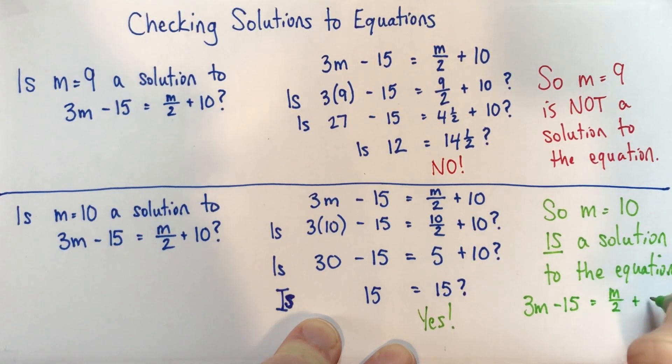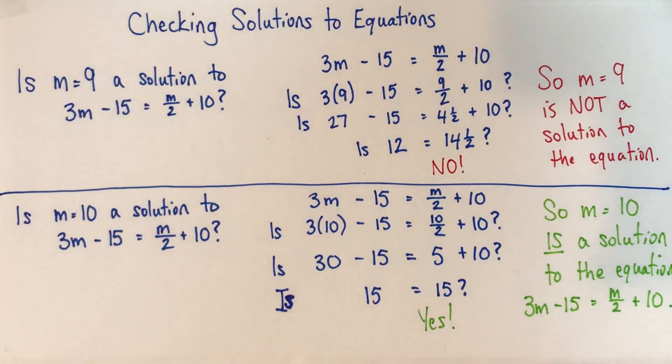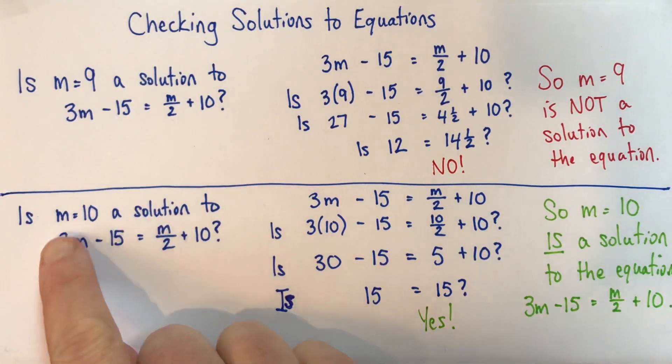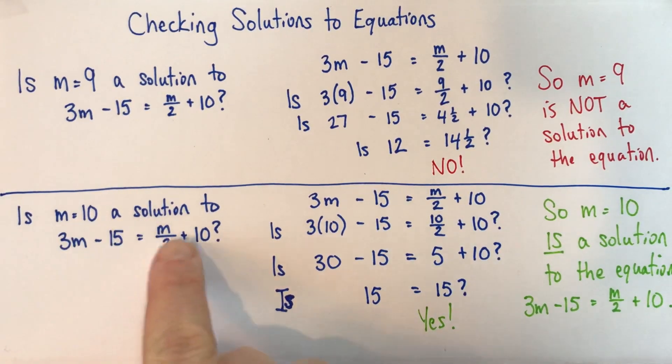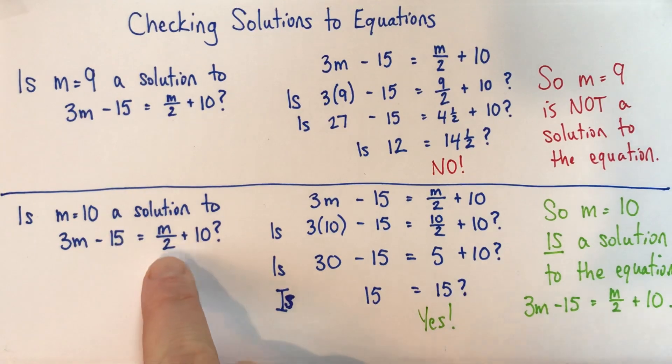Okay, so the key ideas here are if you want to check if something is a solution to an equation, what you do is you substitute it in, so substitute the value for the variable.